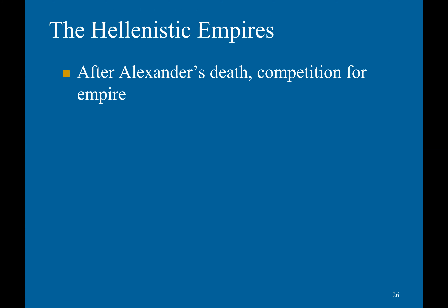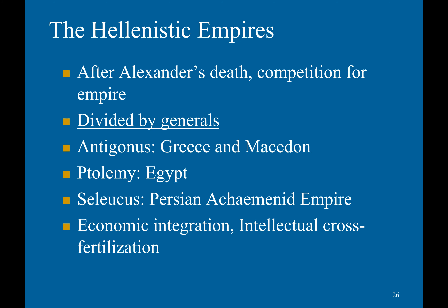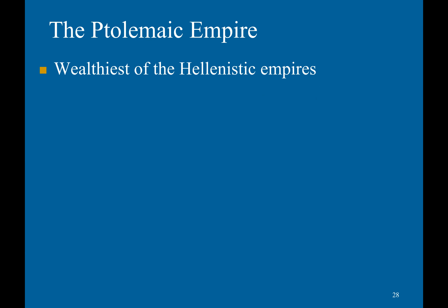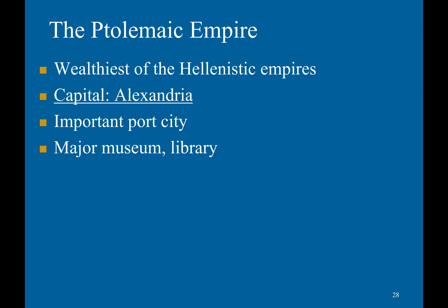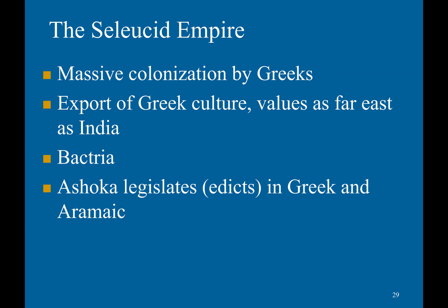After Alexander's death, various generals competed for portions of the empire, eventually dividing it. Antigonus got Greece and Macedon, Ptolemy got Egypt, and the Seleucids got the former Persian-Achaemenid empire. Even despite this division, there was still economic integration and intellectual cross-fertilization. The Ptolemaic empire was the wealthiest, with its capital at Alexandria — named after Alexander — an important port city with a major museum and library. The Seleucid empire was massively colonized by Greeks, with Greek culture and values stretching as far east as India, seen in the kingdom of Bactria and in Emperor Ashoka's edicts being written in both Greek and Aramaic.